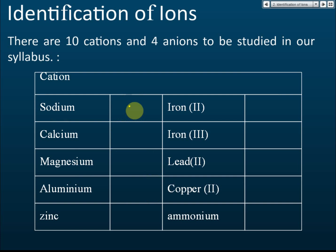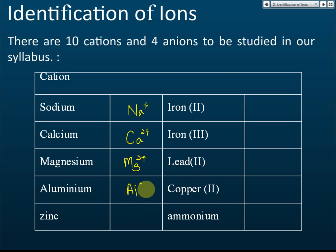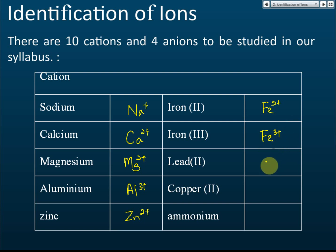The 10 cations are: sodium (Na⁺), calcium (Ca²⁺), magnesium (Mg²⁺), aluminum (Al³⁺), zinc (Zn²⁺), iron(II) (Fe²⁺), iron(III) (Fe³⁺), lead (Pb²⁺), copper(II) (Cu²⁺), and ammonium (NH₄⁺). These are the symbols for the positive ions.